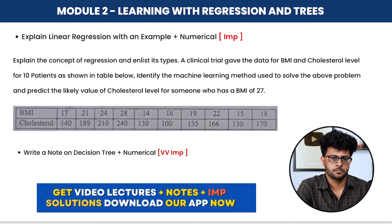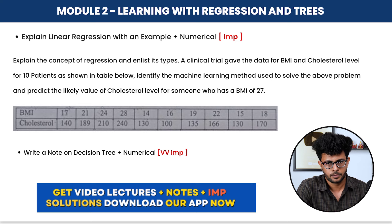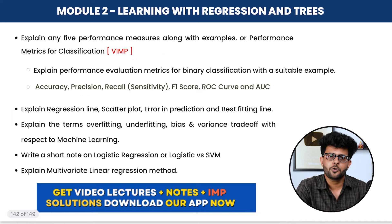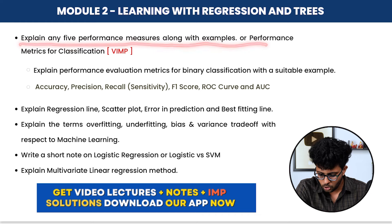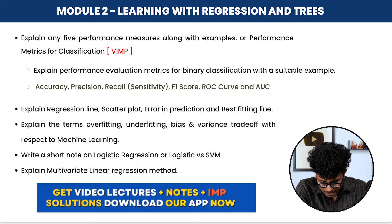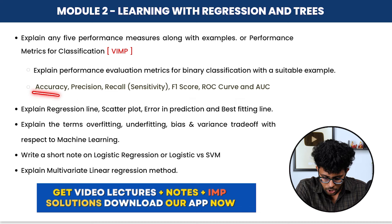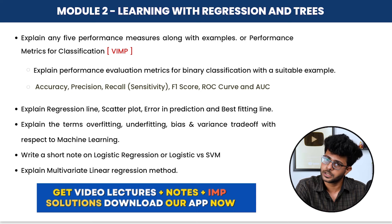Decision trees also come up in Module 2. They are complicated and time-consuming, but very important — typically the last question in the paper. Also important is theory on performance measures. You may be asked to explain any five performance measures with examples, or explain performance evaluation matrices for binary classification with suitable examples. The five key metrics are: accuracy, precision, recall, F1 score, and ROC/AUC curve — know these for 5-mark questions.